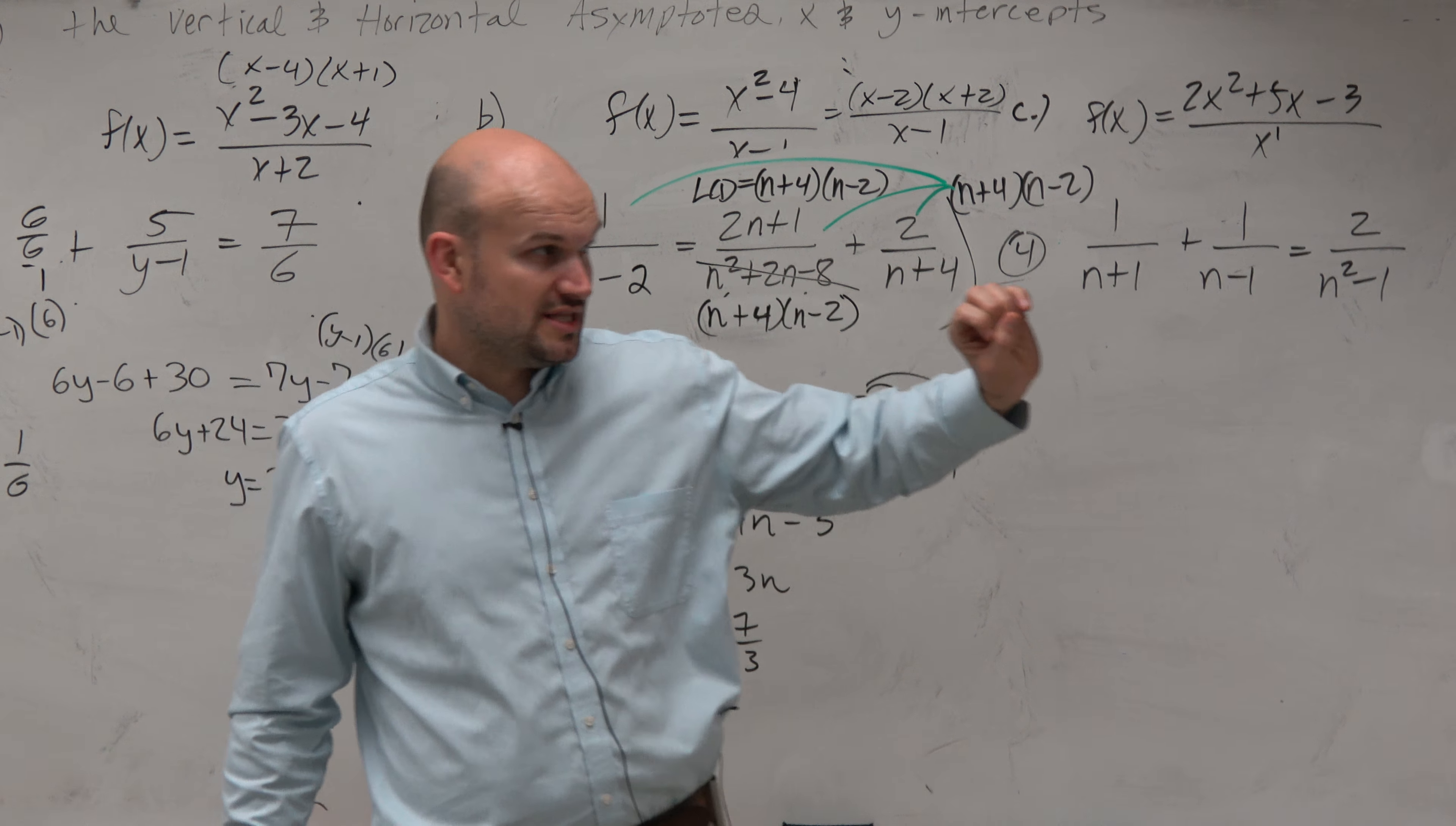And let's do, so let's see, it'll be 7 equals 3n. n is equal to 7 thirds.